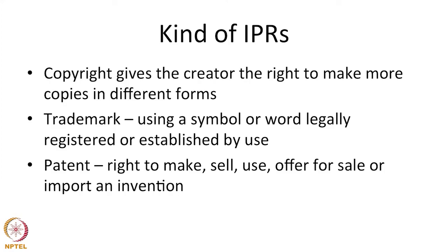The exclusive set of rights that an intellectual property right encompasses would also vary depending on the kind of intellectual property right. If it is a copyright, then the copyright gives the creator a fixed number of years to print, to publish, to perform, to film or to record literary, artistic, musical or other cinematographic works. The set of exclusive rights in copyright pertain to making more copies in different forms.